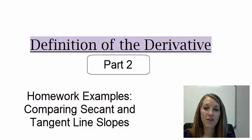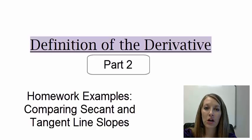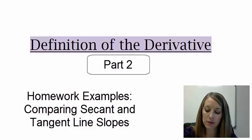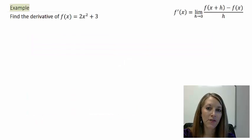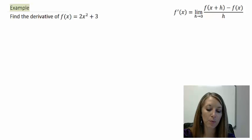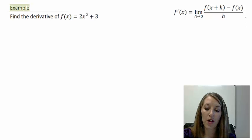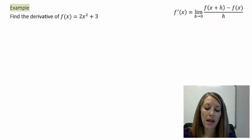We are working with the definition of the derivative. We came up with the formula in our last video, so let's use that formula here to start computing some slopes of tangent lines. My first example is: find the derivative of f(x) = 2x² + 3. The formula is the limit as h goes to 0 of f(x+h) minus f(x), all over h.